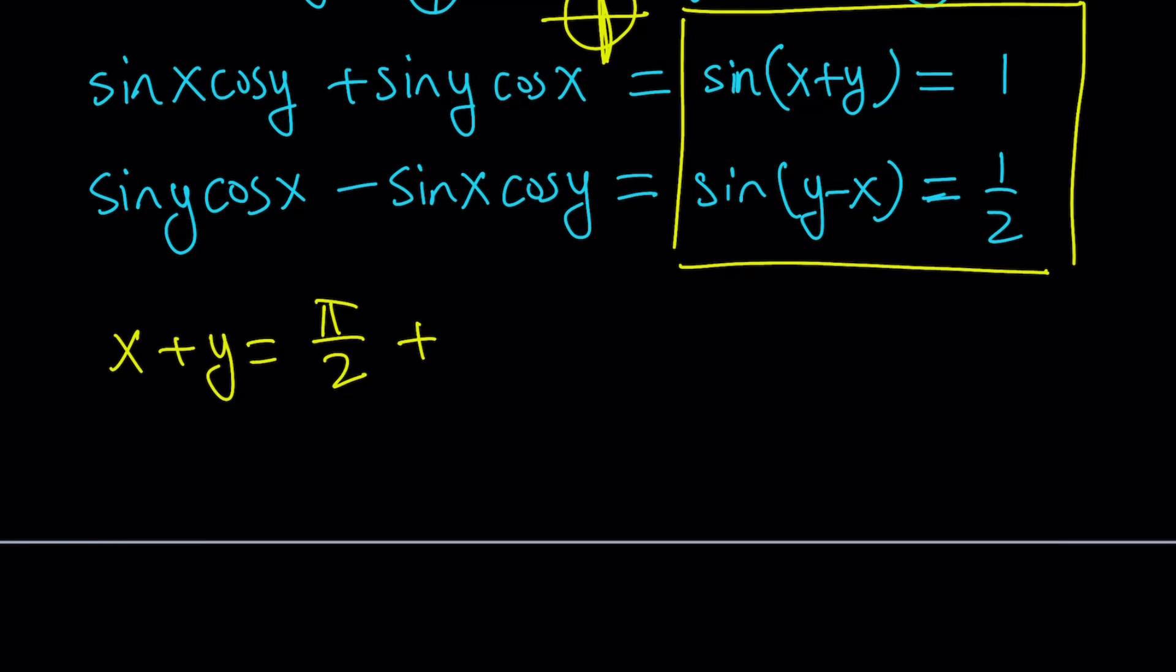Plus, I'm going to be adding, obviously, multiples of two pi to this, right? So we can go ahead and add 2n pi where n is an integer. Okay? So that is for x plus y.